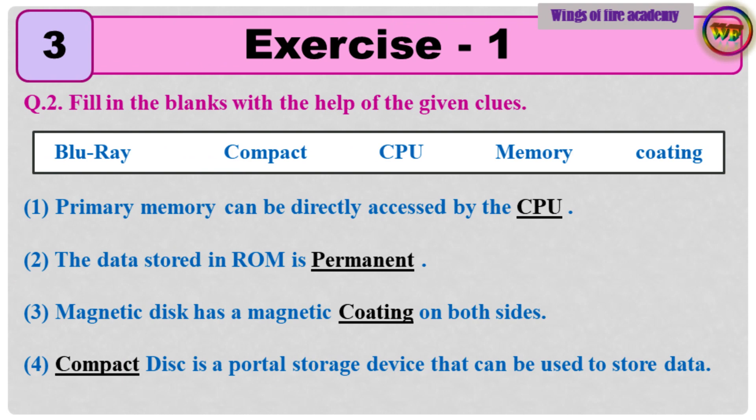Question number 2, fill in the blanks with the help of the given clues. 1. Primary memory can be directly accessed by the CPU. 2. The data stored in ROM is permanent.